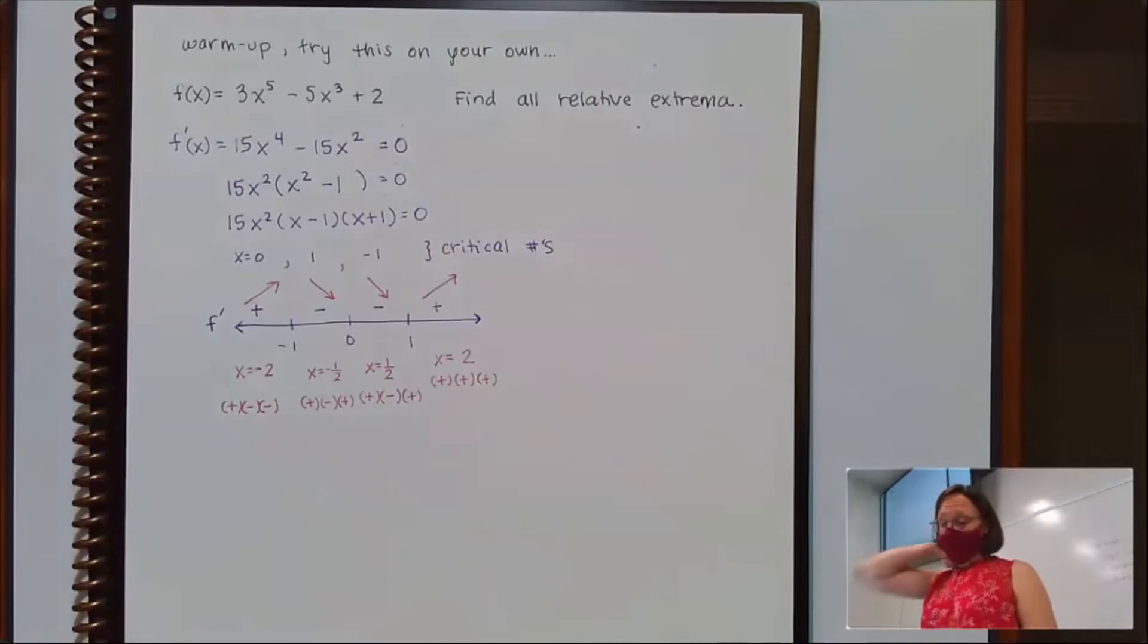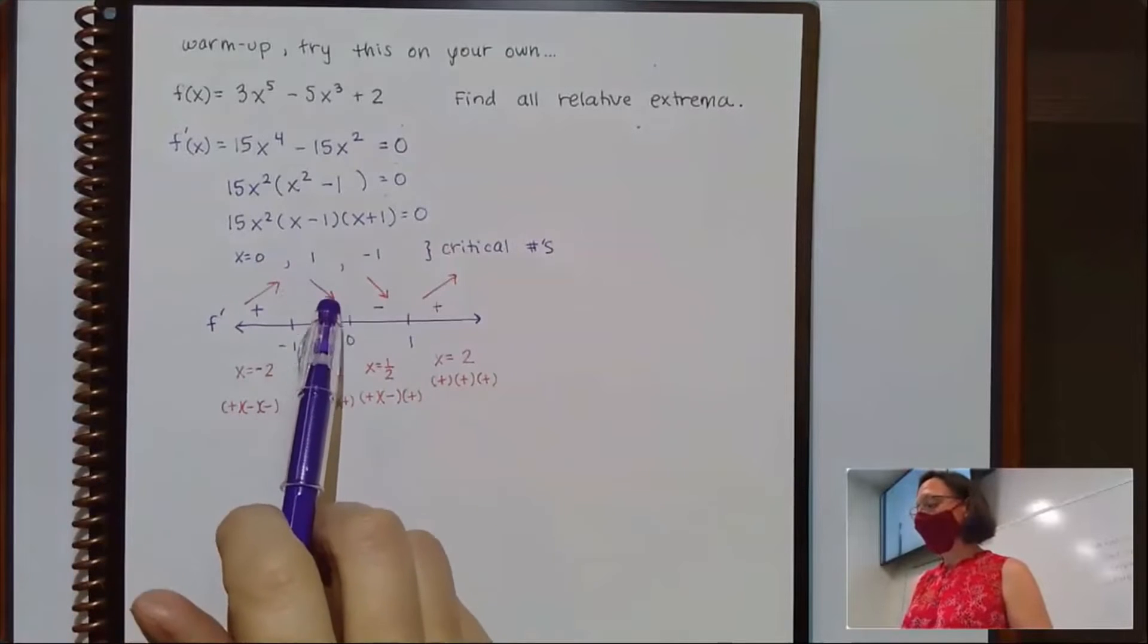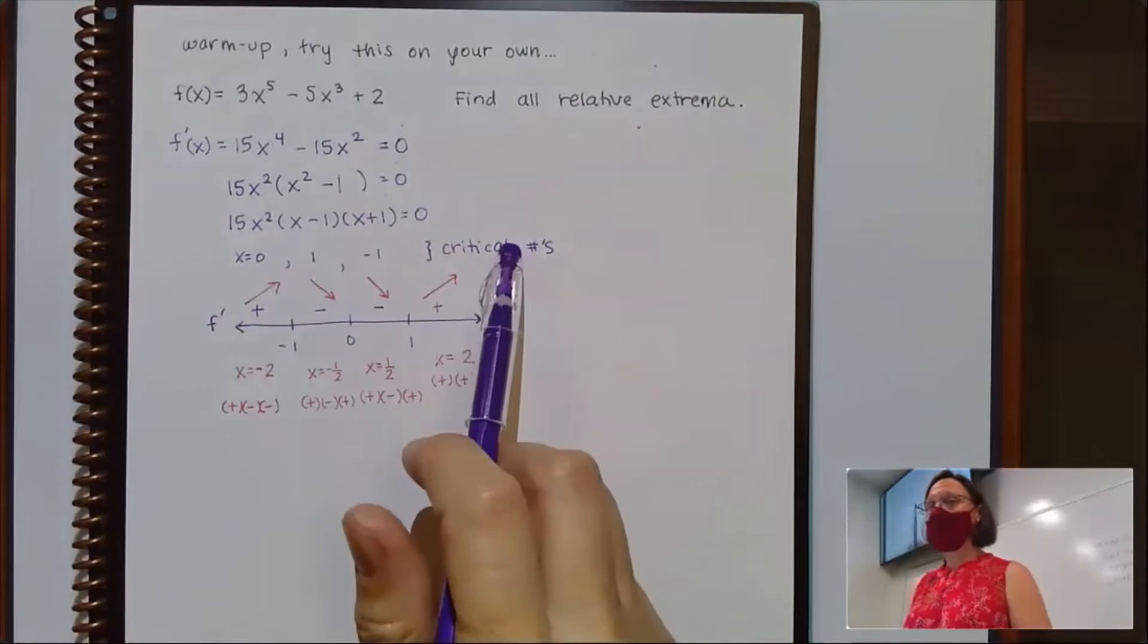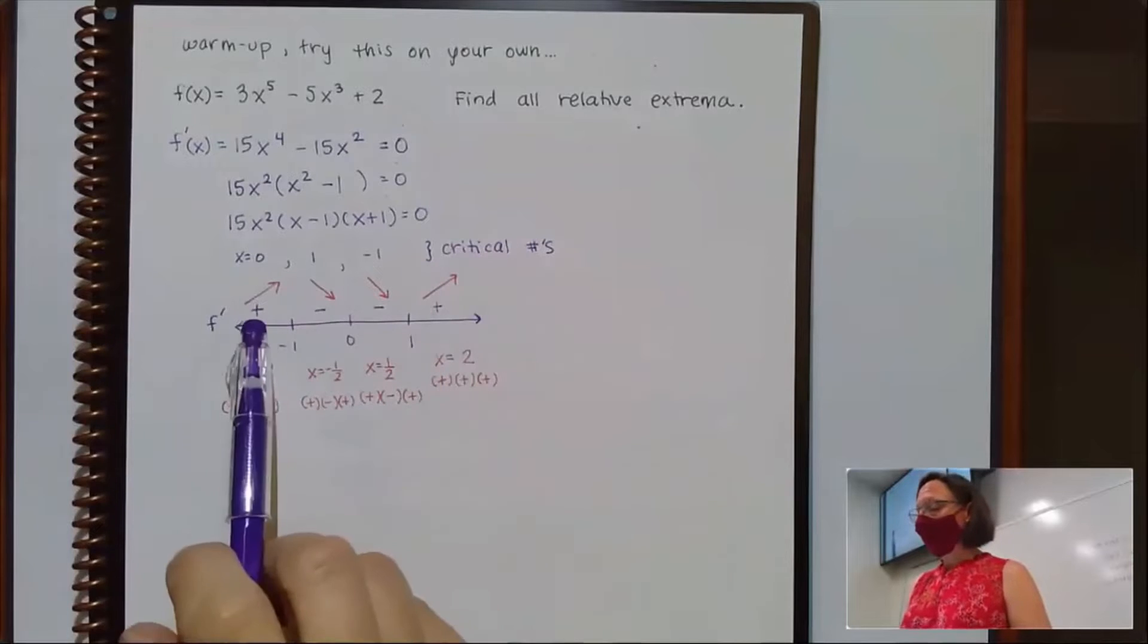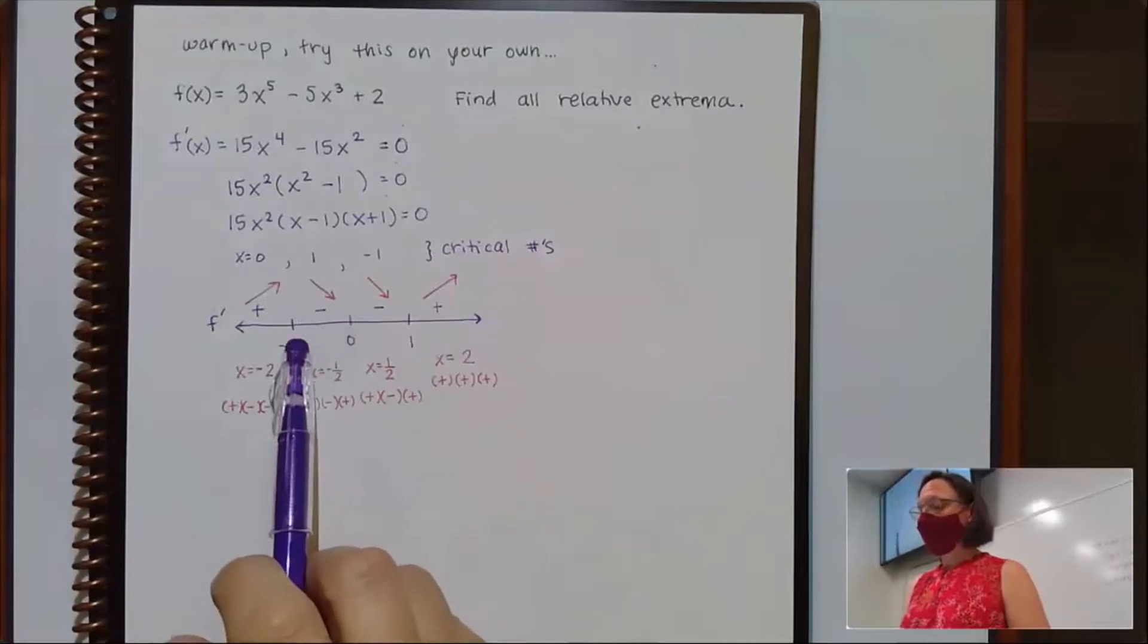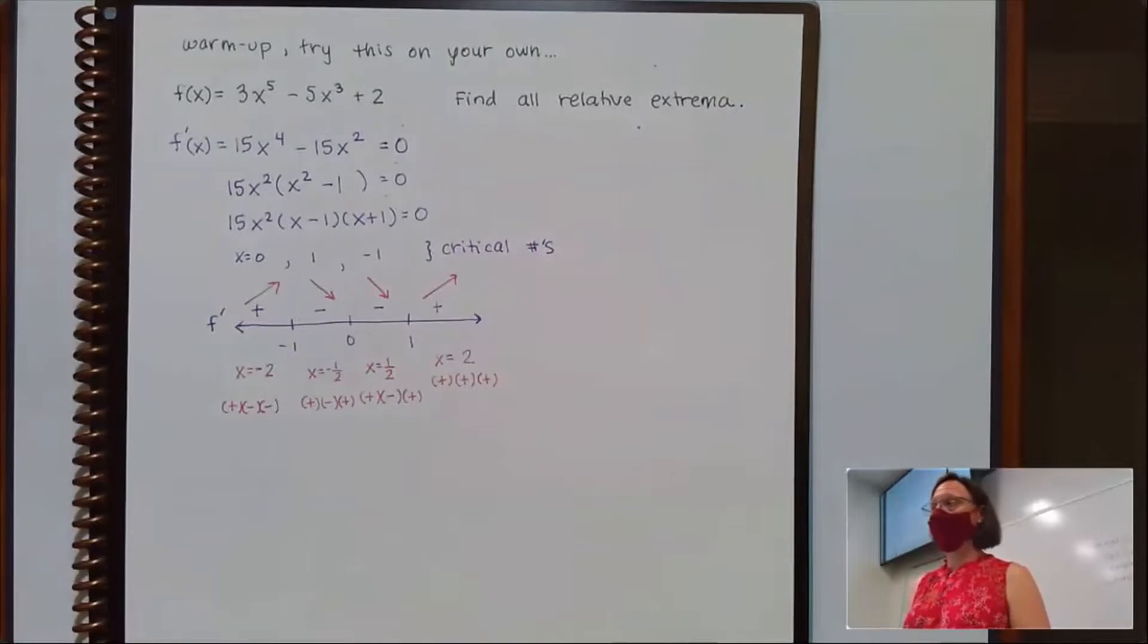So if I think about this in the context of riding this graph along, I was going up, then down, then I keep going down, then I'm going back up. Well, if I was going up and then back down, I know that negative 1 has to be a relative maximum.